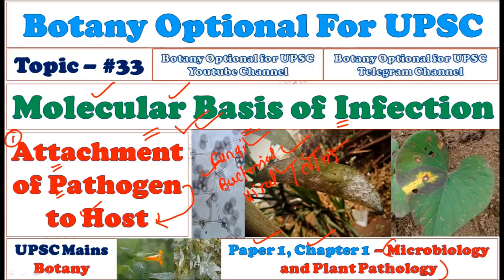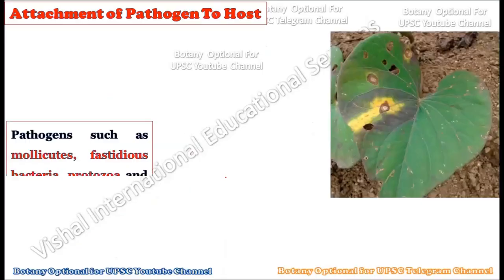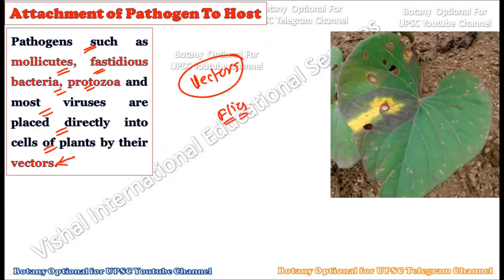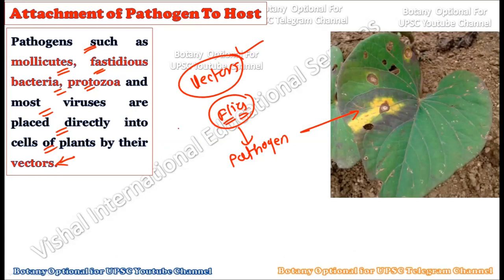We should understand what a pathogen is, where it comes from, and how it attaches to its specific host. Pathogens such as mollicutes, fastidious bacteria, protozoa, and most viruses are placed directly onto the cells of the plant by their vectors. Vectors play a major role in transferring disease-causing pathogens from one plant to another.